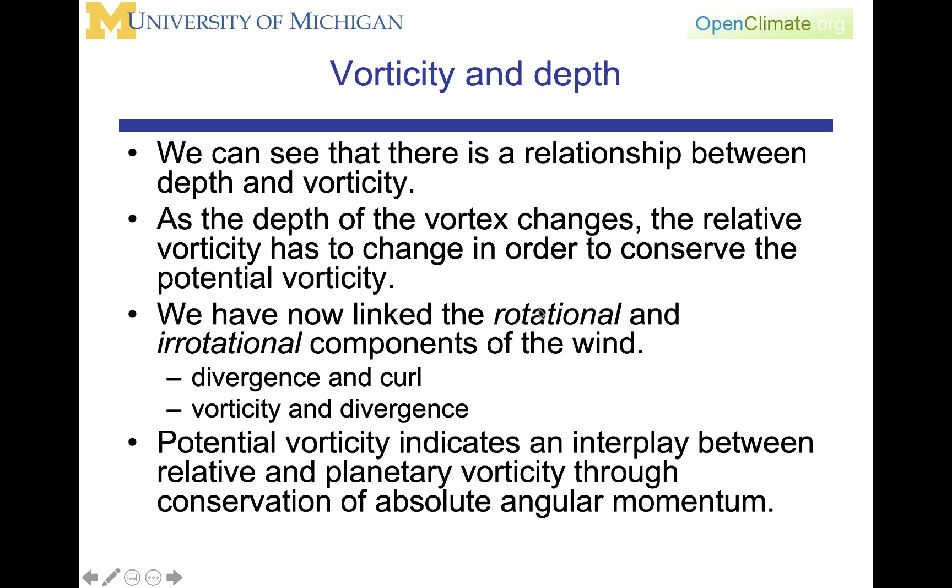We have now linked the rotational and irrotational components of the wind through divergence and curl, vorticity and divergence, but we also have that the potential vorticity is indicating an interplay between relative and planetary vorticity, and this is ultimately through the conservation of angular momentum.